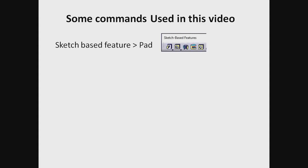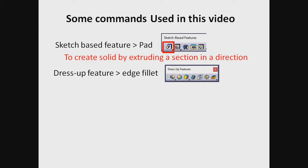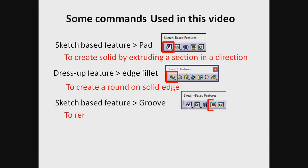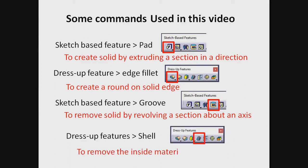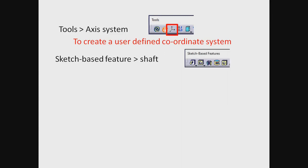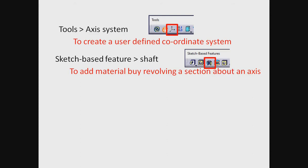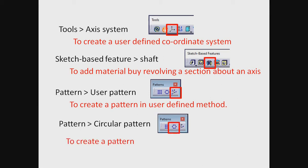Sketch-based feature Pad to create a solid by extruding a section in a direction. Dress-up feature Edge Fillet to create a round on a solid edge. Sketch-based feature Groove to remove solid by revolving a section about an axis. Dress-up feature Shell to remove inside material of a solid. Tools Axis System to create a user-defined coordinate system. Sketch-based feature Shaft to add material by revolving a section about an axis. Pattern: use a user-defined method or Circular Pattern to create a pattern on a circular path.